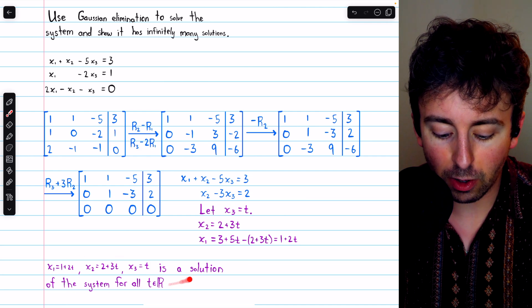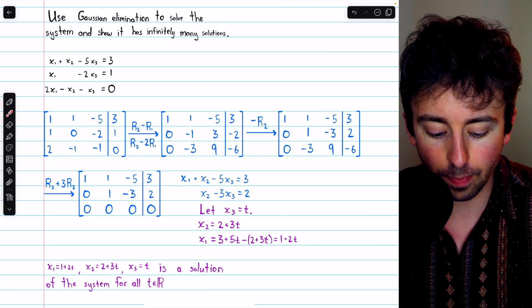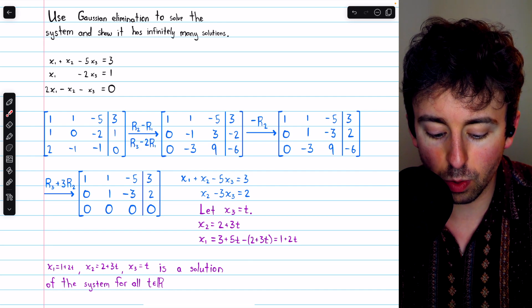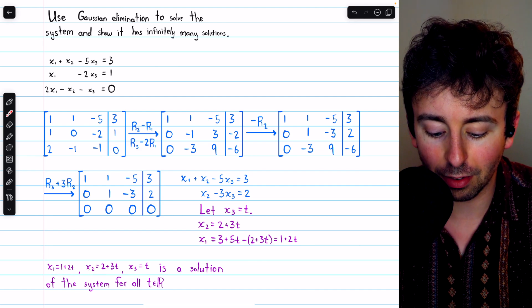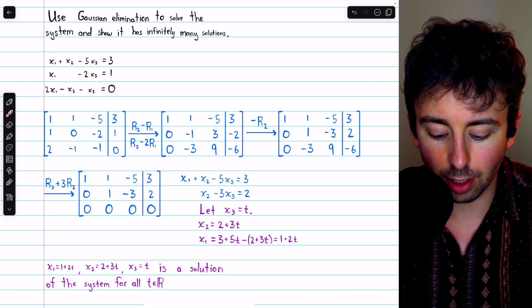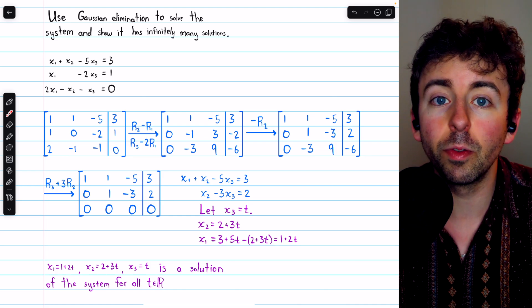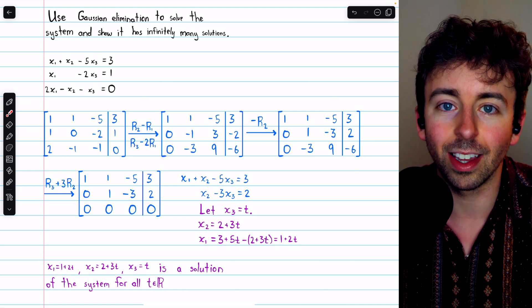And so we have these parametric equations describing the complete solution set to this system. x1 equals 1 plus 2t, x2 equals 2 plus 3t, and x3, the free variable, equals t, is a solution of the system for all real numbers t. Hence, of course, there are infinitely many solutions to this system.